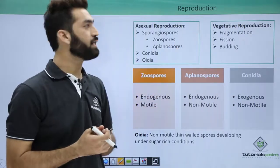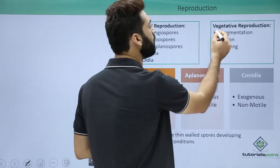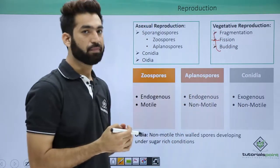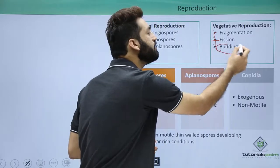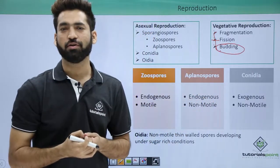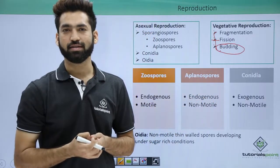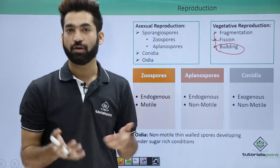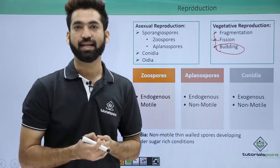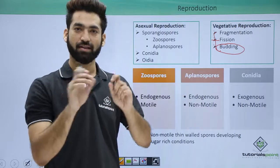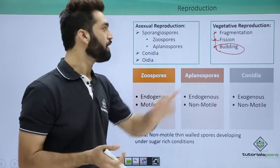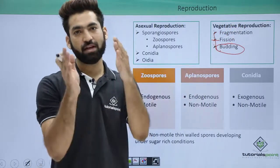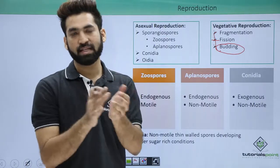In vegetative reproduction, all the modes are seen: fission, fragmentation, and budding. Remember, budding is basically seen in yeast — budding is seen only in unicellular organisms. In budding or fission, the unicellular fungus, which is yeast, forms a bud, and this bud grows and separates.